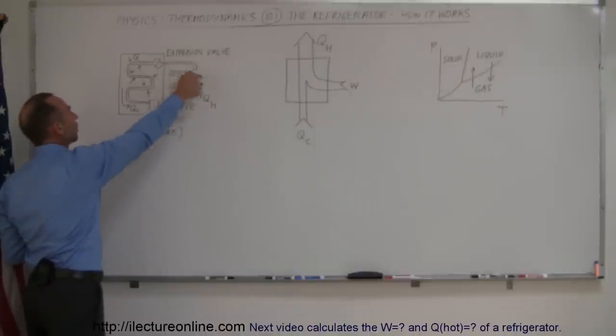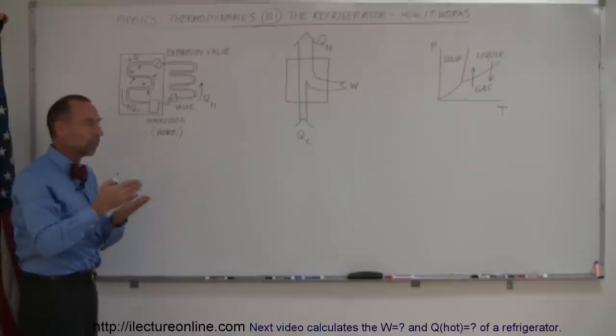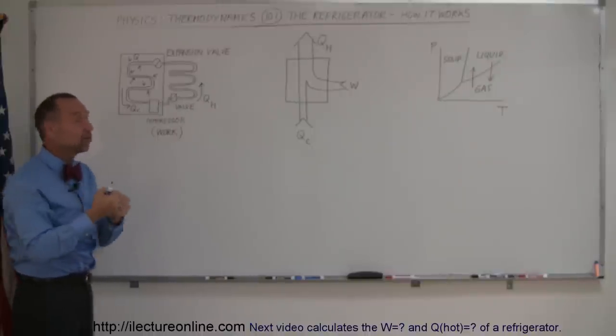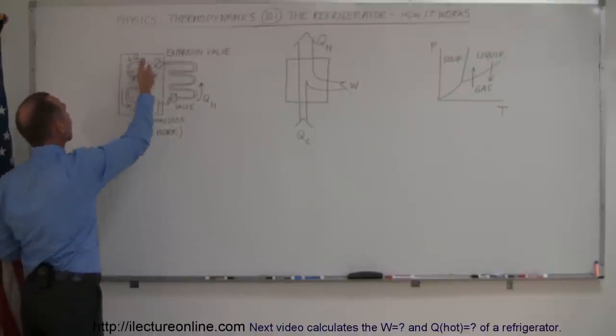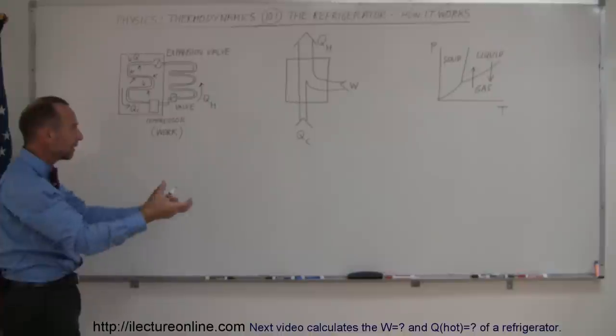Once the refrigerant, which is in a liquid state over here, gets pushed into this region right here, it turns back into a vapor. And of course when something goes from a liquid to a vapor, it absorbs energy. Where does energy come from? It takes heat from the refrigerator compartment, and even though it's already cold, it grabs additional heat and makes it even colder.